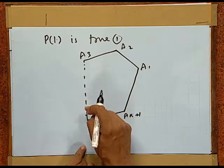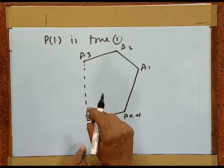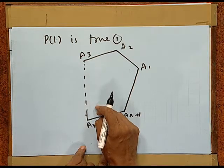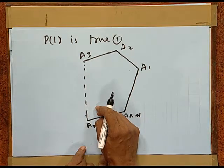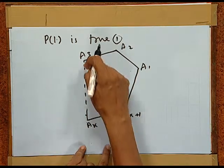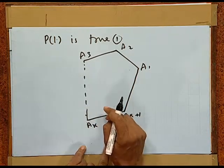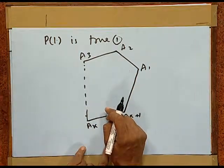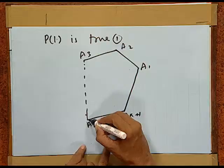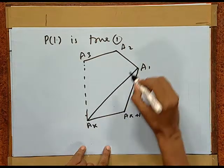Here, the dotted lines indicate the missing sides which cannot be shown in a diagram. In fact, this dotted line indicates the sides A3, A4, and so on up to A(k-1), Ak. Now, if we join Ak with A1,